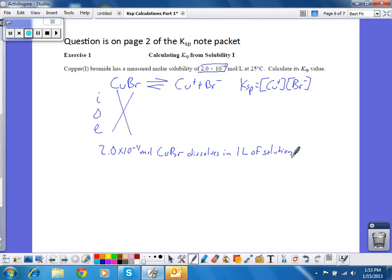So, when this splits apart, you notice there's a 1 to 1 to 1 mole ratio here. So, for every mole of CuBr that dissolves, I get one mole of copper ion and one mole of bromide ion. So, initially, when I put this solid in water, I have no concentration. When I get to equilibrium, the concentration of each ion is going to be 2.0 times 10 to the negative fourth because it's a 1 to 1 to 1 mole ratio.